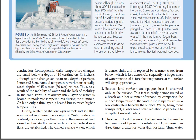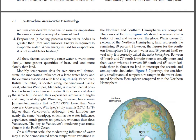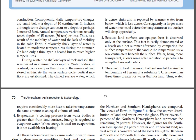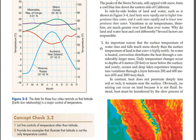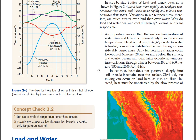Why do land and water heat and cool differently? Several factors are responsible. First, convection: water is highly mobile, so as it is heated, convection distributes the heat through a considerably larger mass. Daily temperature changes occur to depths of 6 meters (20 feet) or more below the surface, and yearly, oceans and deep lakes experience temperature variations through a layer between 200 and 600 meters (650–2,000 feet) thick. In contrast, heat does not penetrate deeply into soil or rock — it remains near the surface. No mixing can occur on land because it is not fluid; instead, heat must be transferred by the slow process of conduction.